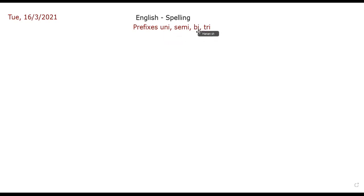The last time we covered uni, semi, bi, and tri. What does 'bi' mean? For example, I say bicycle — what does it mean? It's a vehicle. How many wheels does it have? Two. So 'bi' means two.